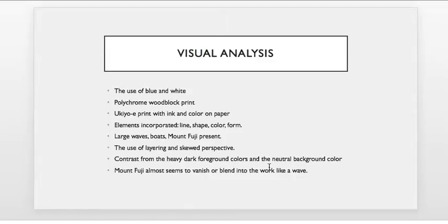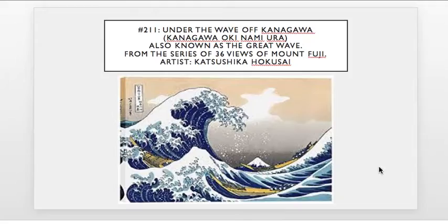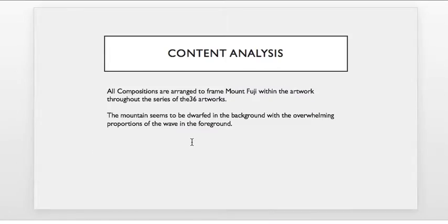Moving into content, talking about the composition itself: all the compositions within the series would actually frame Mount Fuji in some way within the artwork. It doesn't necessarily make it the complete center focal point, but it does frame it somewhere. In this case, we see the wave framing the artwork along with the boat. In other prints throughout the series, they may be sectioned a little bit differently. We also see how the mountain appears dwarfed in the background with the overwhelming proportion of the waves in the foreground.